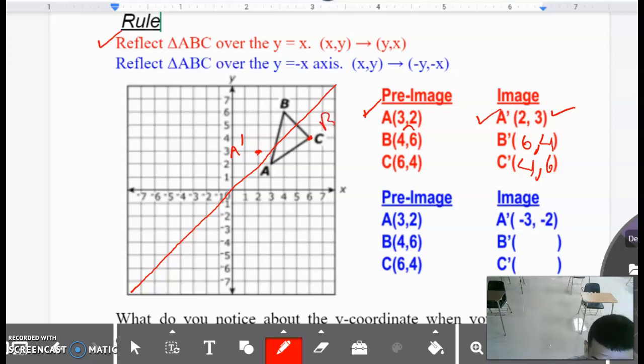That is new B. And then new C is four to the right, six up. So four to the right, six up. One, two, three, four, five, six. That becomes new C.